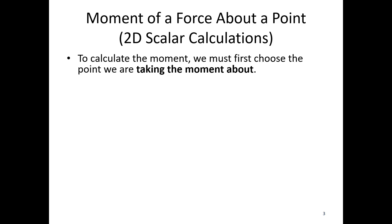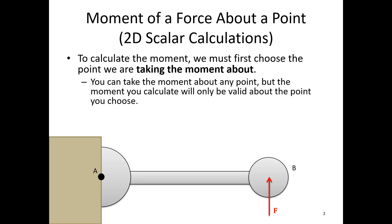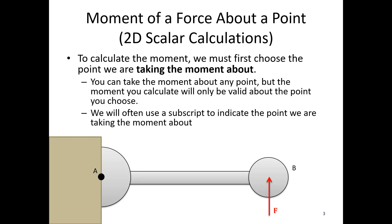To calculate a moment, we must first choose a point that we're taking the moment about. Looking down here, I've got a lever, and the base of the lever is at A, and the handle end of the lever is at B. I'm going to imagine pushing up at point B with a force, and I want to take the moment about the base of the lever at point A. You can take the moment about any point, but the moment you calculate will only be valid for the point that you choose. We're often going to use a subscript to indicate the point we are taking the moment about — so if I'm taking the moment about point A, I might call that M_A.